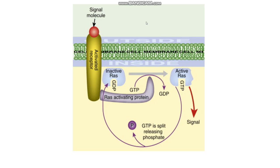If you have growth factors — for example, steroid hormones like estrogen, testosterone, or cortisol — these can bind to a growth factor receptor. Once the growth factor binds to the growth factor receptor on the cell membrane, the receptor gets activated. And this will actually activate the RAS protein.